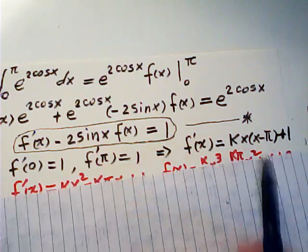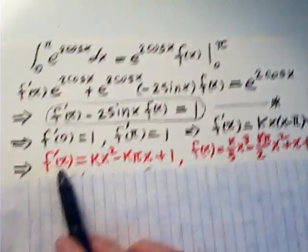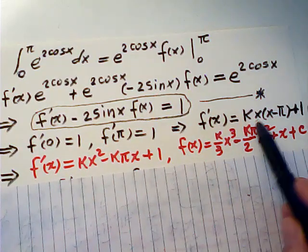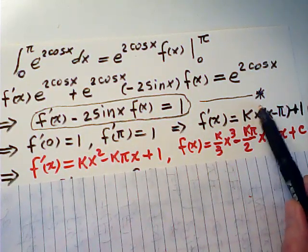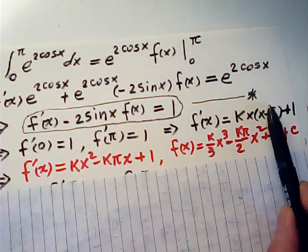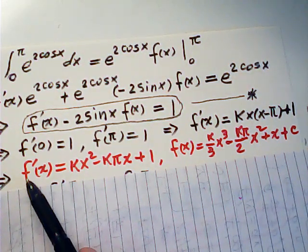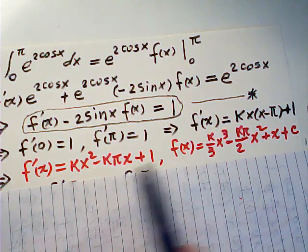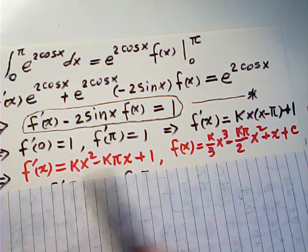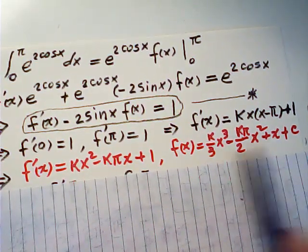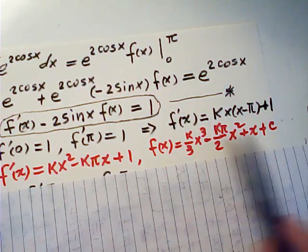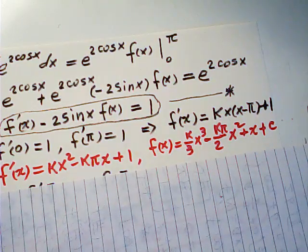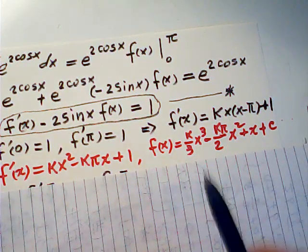Then from this we can find f(x). We multiply this to the bracket, we have this, right? That is f(x). If we have f prime of x, then we can find f(x) simply by integrating this one. So we have f(x) but we have two unknowns, k and c. If we find k and c, we find f(x).